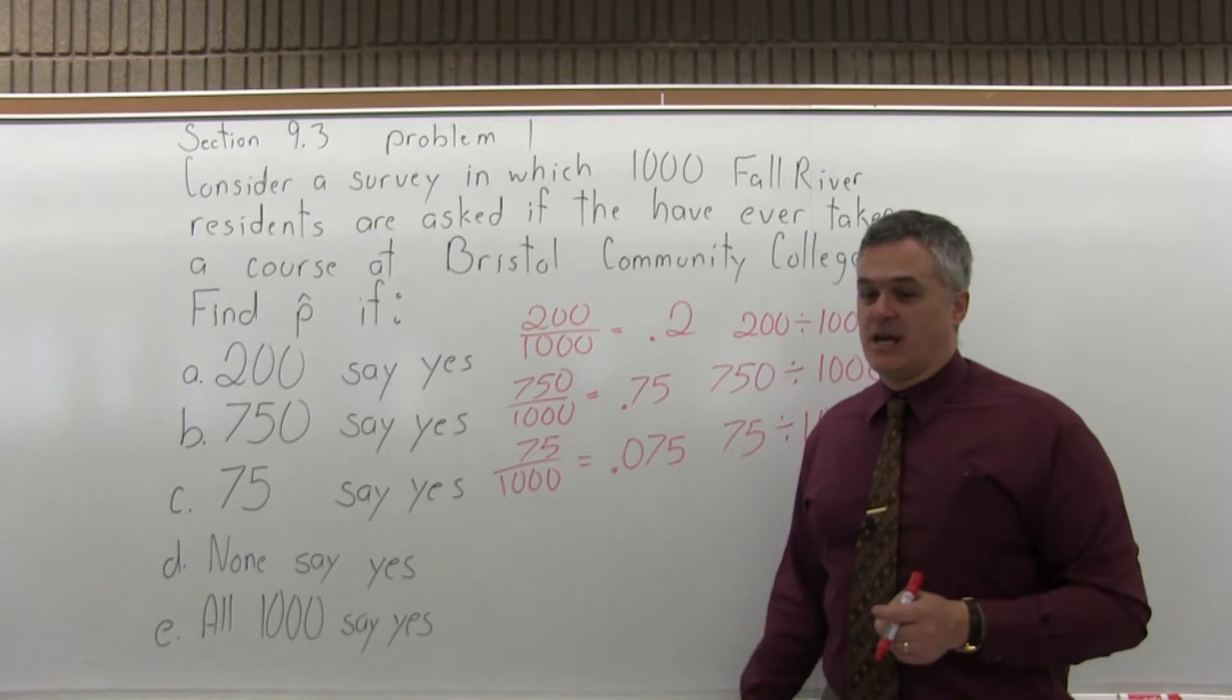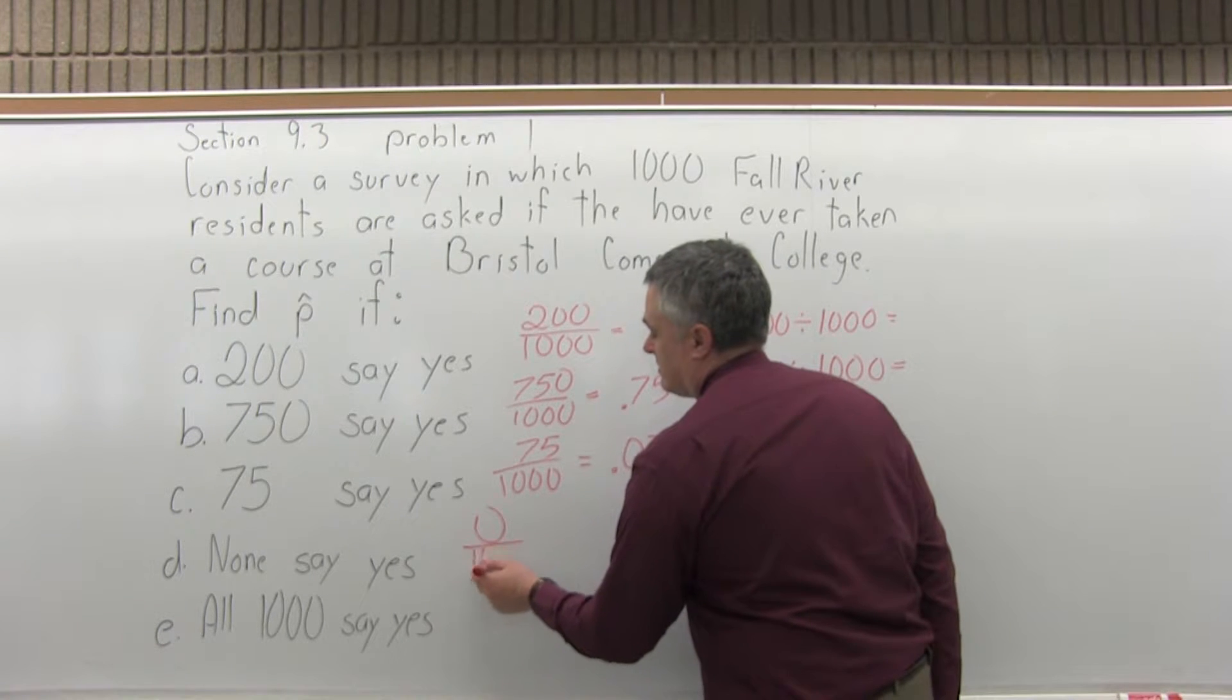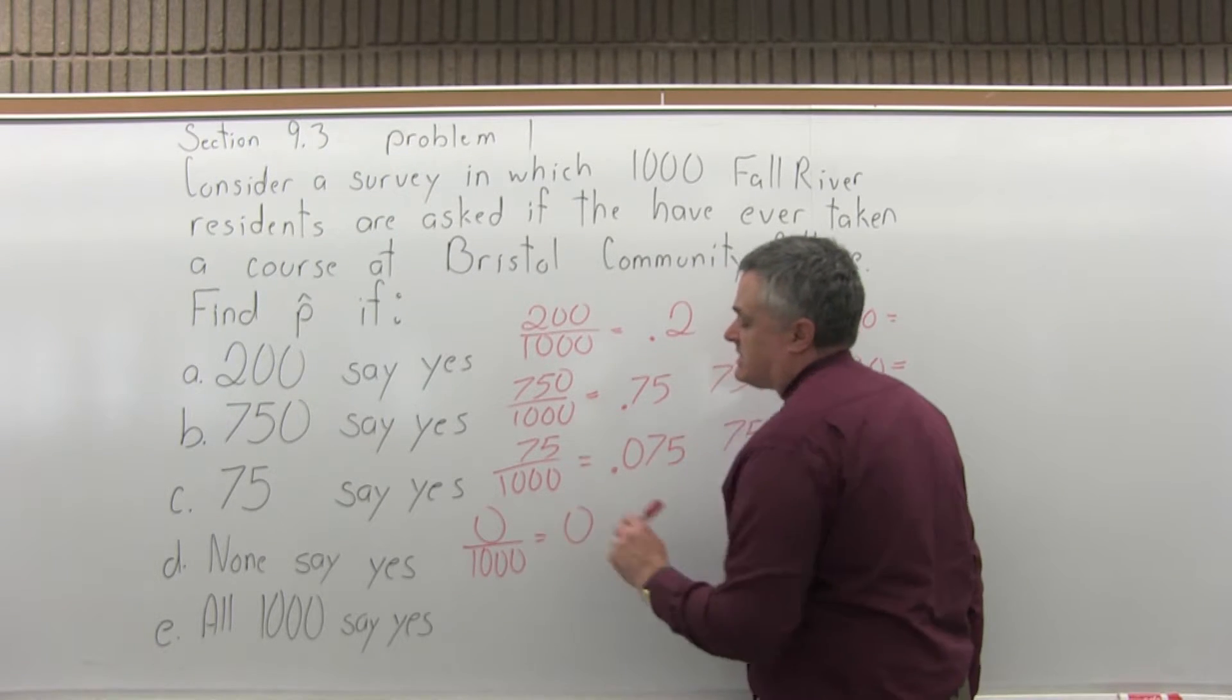How about if none of them say yes? The number that would say yes would be 0 over 1,000, which is pretty easy, that's 0.